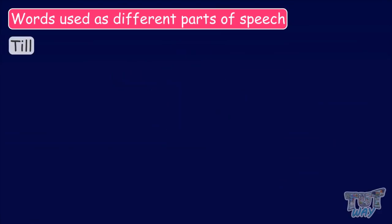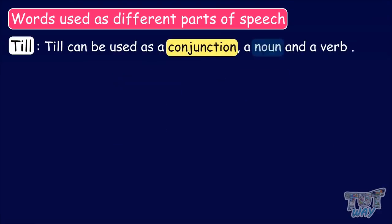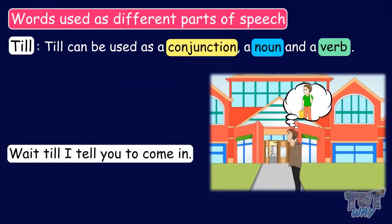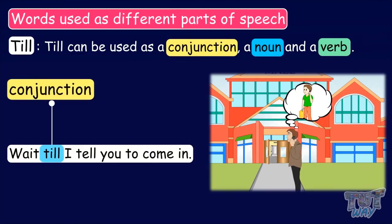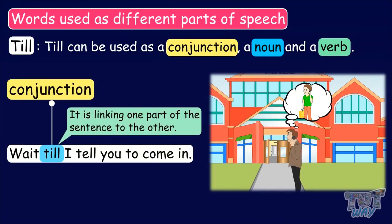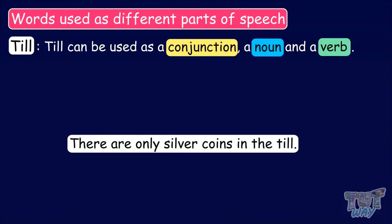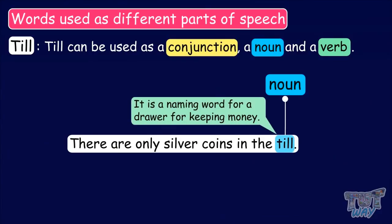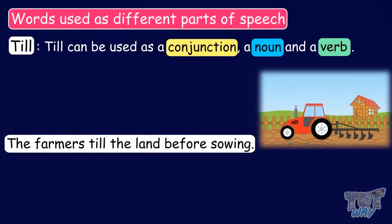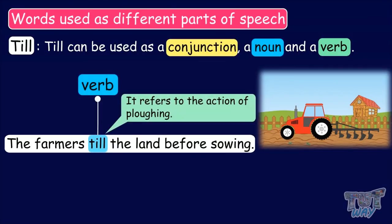Our next word is 'till'. Till can be used as a conjunction, a noun, and a verb. Wait till I tell you to come in. Here, the word till is used as a conjunction, as it is linking one part of the sentence to the other. There are only silver coins in the till. Here, the word till is used as a noun, as it is a naming word for a drawer for keeping money. The farmers till the land before sowing. Here, the word till is used as a verb, as it refers to the action of plowing.